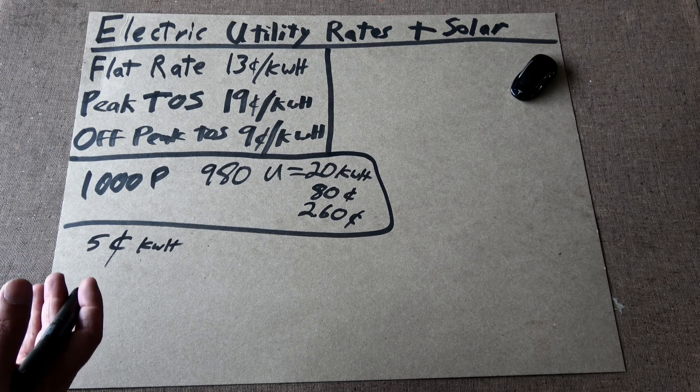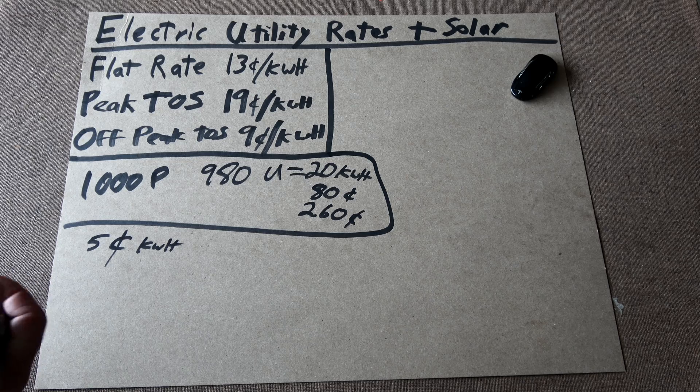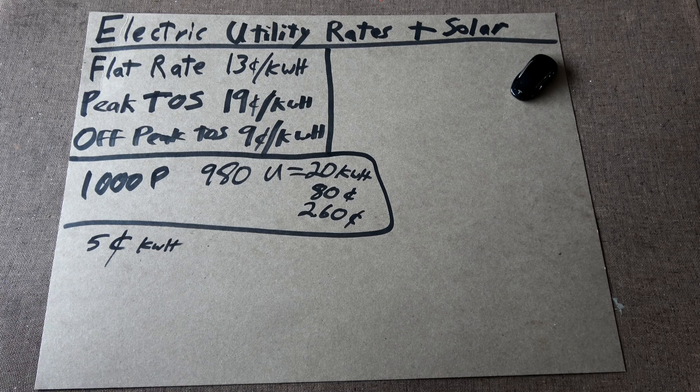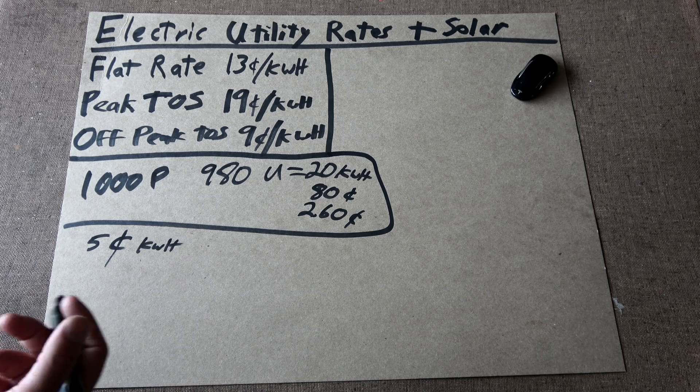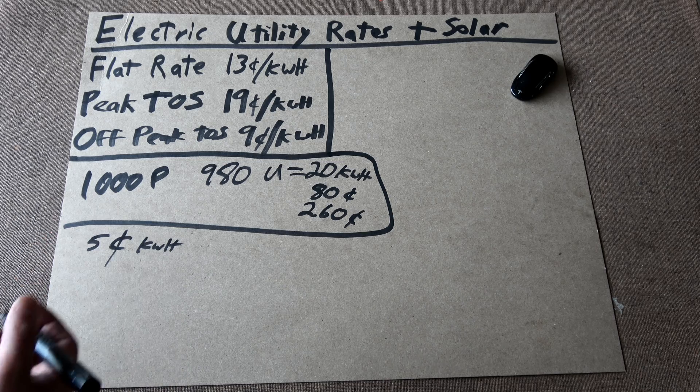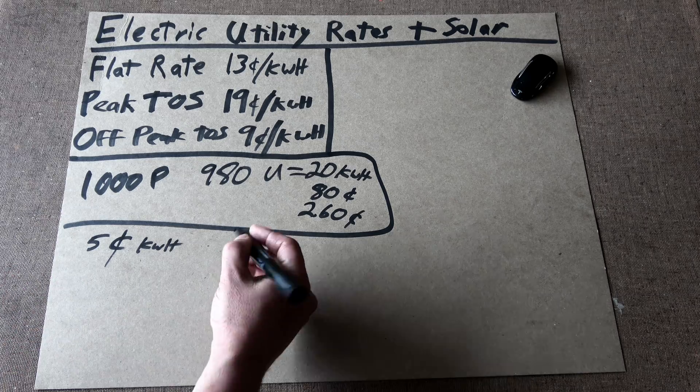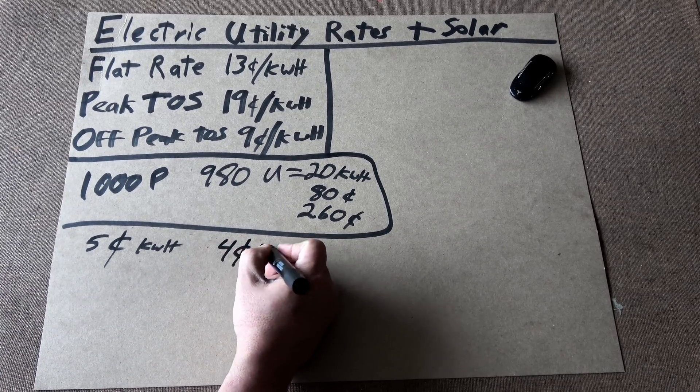Peak here is considered 7 a.m. to 7 p.m. weekdays, which is where the highest demand usage is for the utility. Off-peak: nights, weekends, 7 p.m. to 7 a.m. Basically, think of it like your cell phone. Whenever your cell phone's got unlimited minutes for free, it's a similar concept. And off-peak, you're getting paid about 4 cents a kilowatt hour.